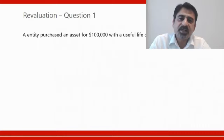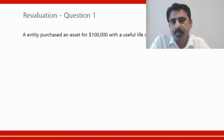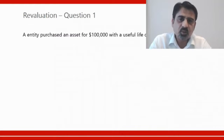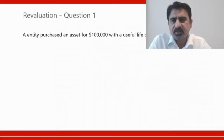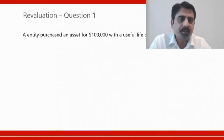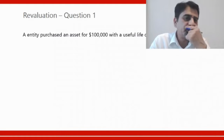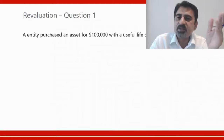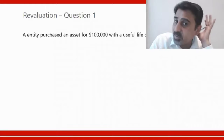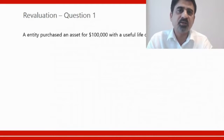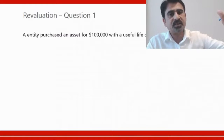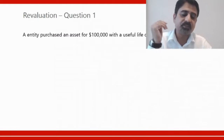Let's look at a revaluation example. An entity purchased an asset for $100,000 with a useful life of 20 years. Residual value is zero, and straight-line method applies by default. Annual depreciation is $100,000 minus zero divided by 20, which equals $5,000 per year. So the asset loses $5,000 in value every year: from $100,000 down to $95,000, $90,000, and so on until it reaches zero in 20 years.